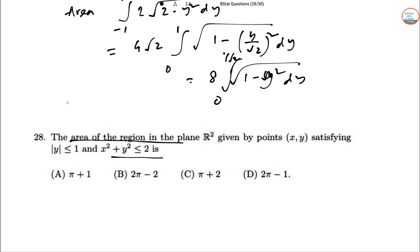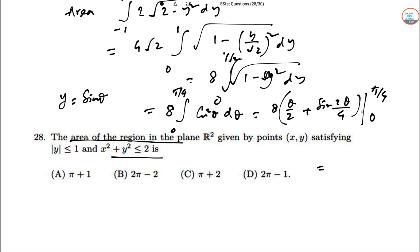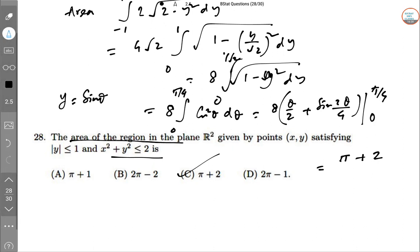Let Y = sin θ. This gives 8∫₀^(π/4) cos² θ dθ. That is 8[θ/2 + sin(2θ)/4] from θ = 0 to π/4. Once we put this value: 8(π/8 + 1/4). So π + 2 is the answer. Hence C is the answer.